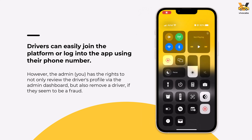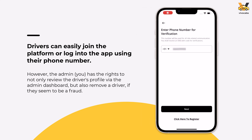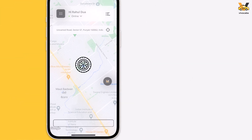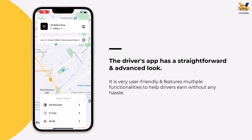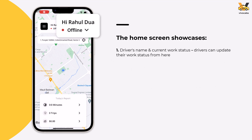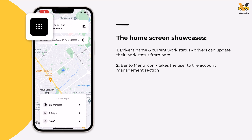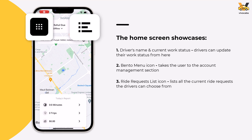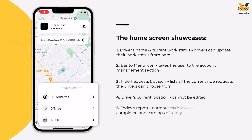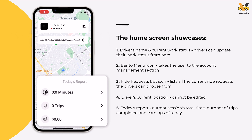Once the driver's app is downloaded and opened, the user is taken to the login page, where they can either log in or register using their number and an OTP. Once logged in, the user is directed to the home screen. At the top is the driver's name and current work status, a bento menu icon on the left, and a ride request list icon on the right. Below is the driver's current location, and at the bottom is a daily summary including total session time, trips completed, and total earnings.